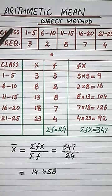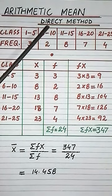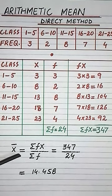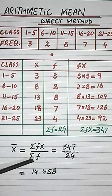Dear students, we can find arithmetic mean of grouped data by direct method with the help of the formula: x bar equals sigma fx over sigma f.